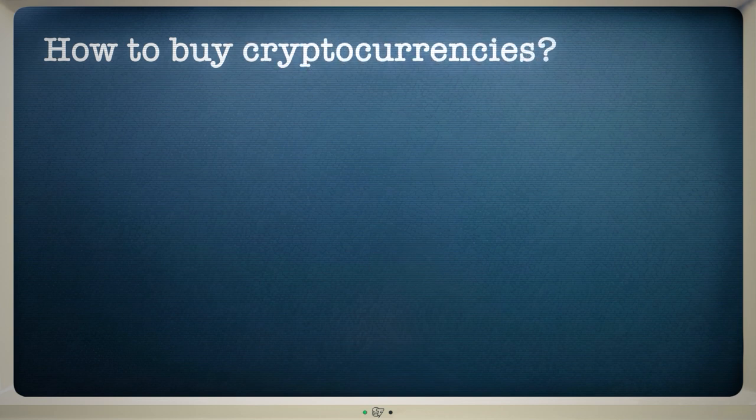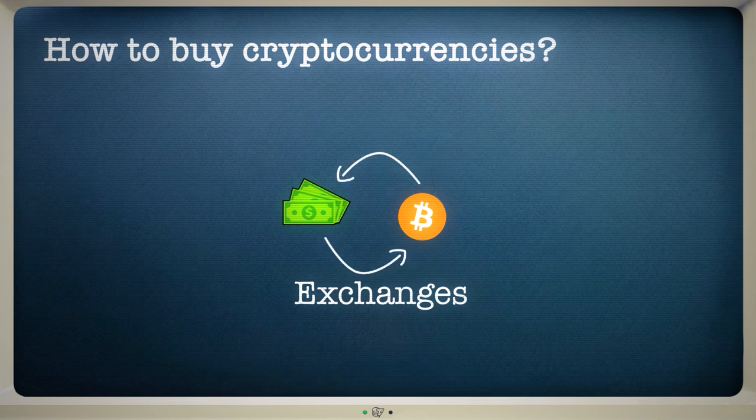So, how do you buy cryptocurrencies? Well, the most common place to go is a crypto exchange. Here, you can convert traditional currencies into digital assets. Many trading platforms accept a range of payment methods, including bank transfers and credit cards.